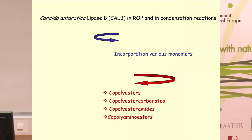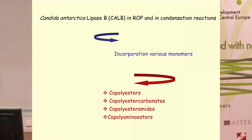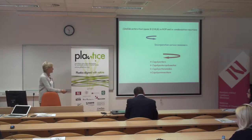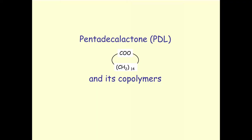The lipase used was lipase B from Candida antarctica. Various types of monomers can be incorporated — not only to produce co-polyesters, but also carbonates, ester-amides, amino esters, etc. I won't have time to go into all these categories; I will concentrate on one special monomer: pentadecalactone.